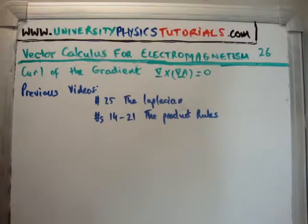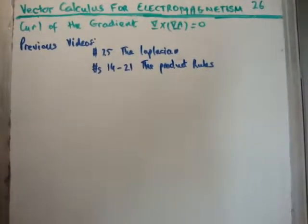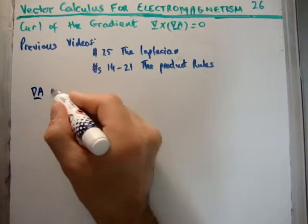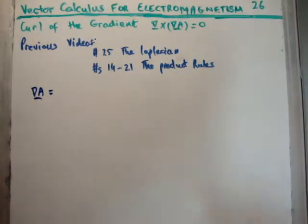So to be honest this video is going to be pretty short because it's a very straightforward identity to prove. So first of all we take the gradient of the scalar function A. Of course it returns a vector field.